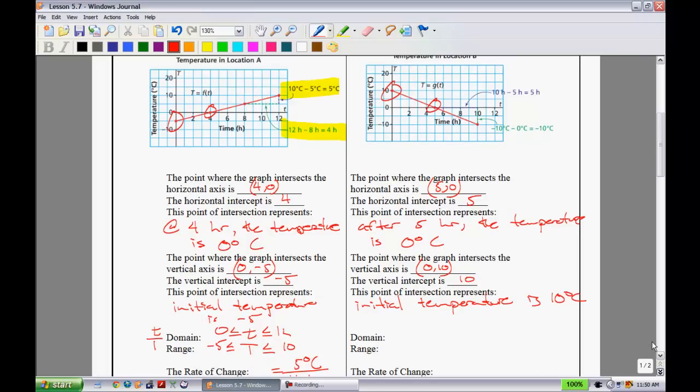The domain—remember domain is talking about time, range is temperature. What possible times do we have here? It looks like it goes from zero to 10. So the maximum time is 10 hours and the minimum time is zero hours. In terms of temperature, my maximum temperature is 10 degrees. My minimum temperature is -10 degrees.